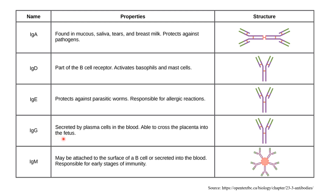IgG is secreted by plasma cells in the blood. It is able to cross the placenta. So which immunoglobulin is able to cross the placenta? IgG.